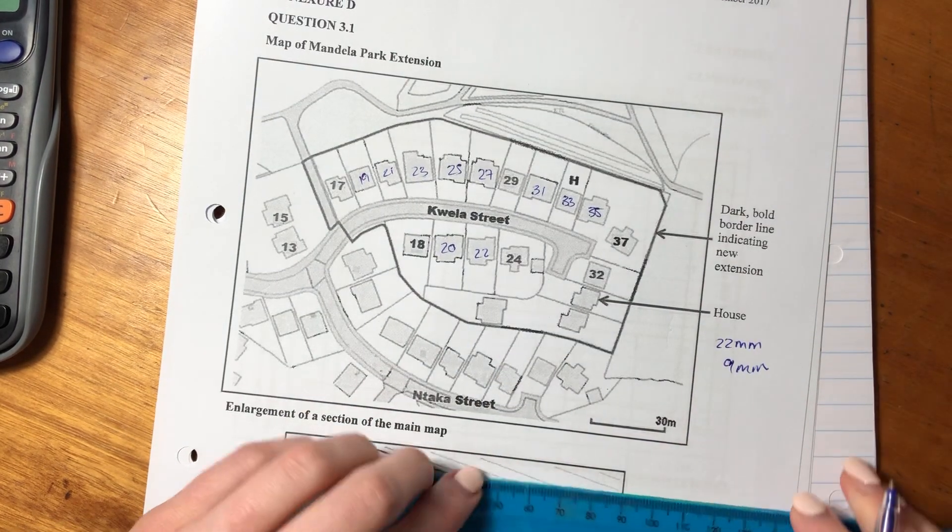So I'm saying 22, looks like 22, right? 22 millimeters by, what's that? It's like nine, nine millimeters. So I'm getting 22 by 9. And it's asked us for the dimensions, right? So it hasn't asked us for the area. It's basically asked us to say what do each of these dimensions translate into in meters? So let's quickly look at the scale.